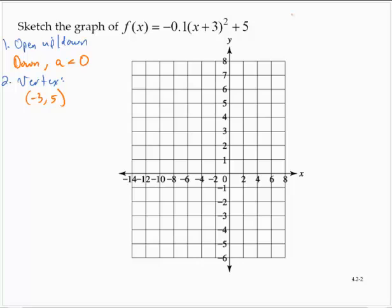So it's in that form, a times (x - h)² plus k.